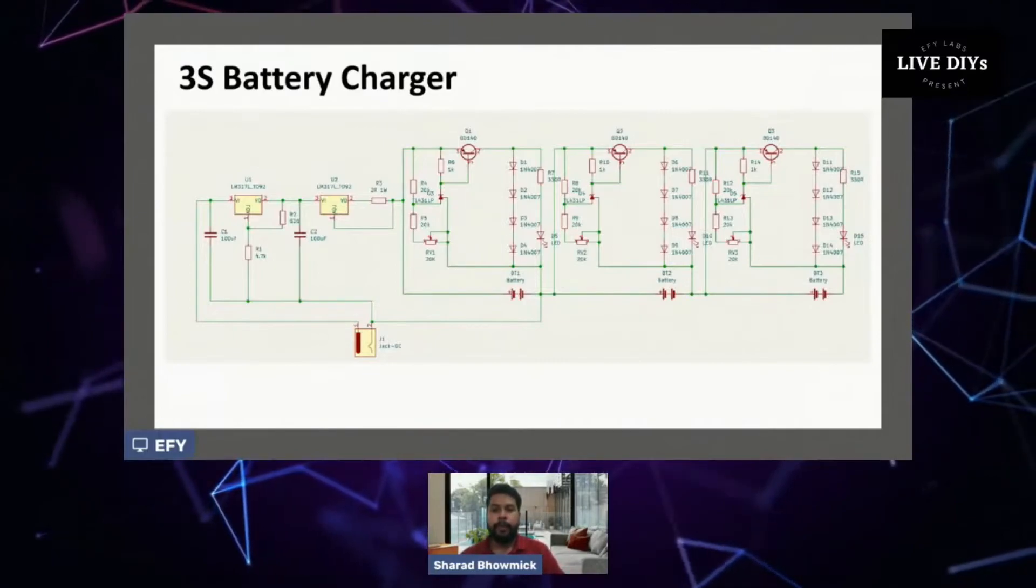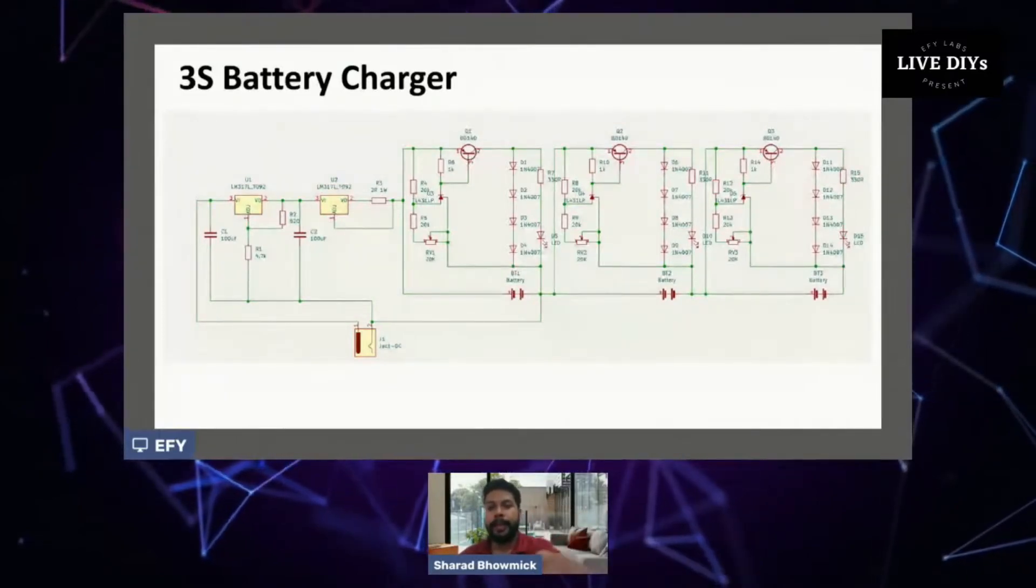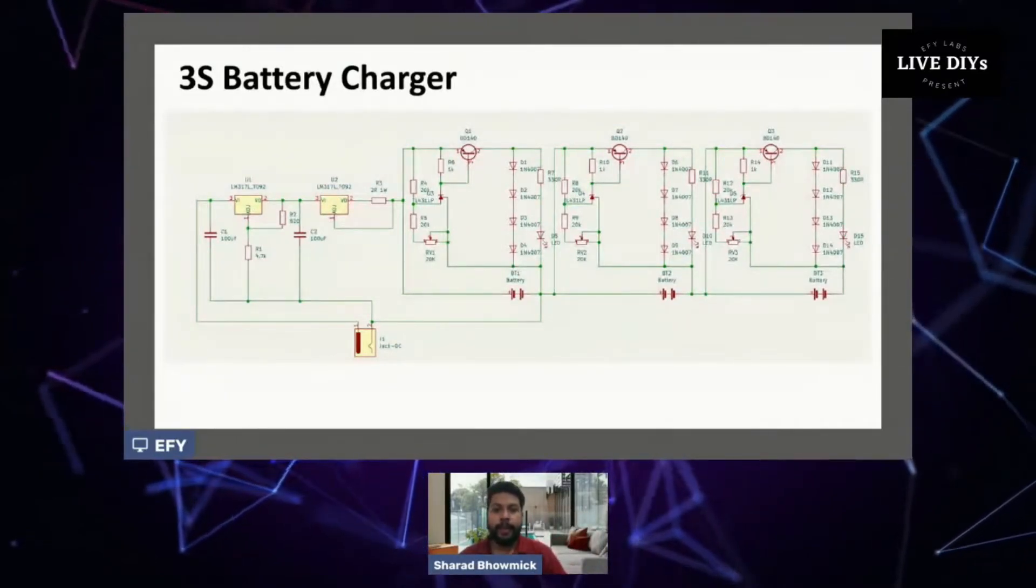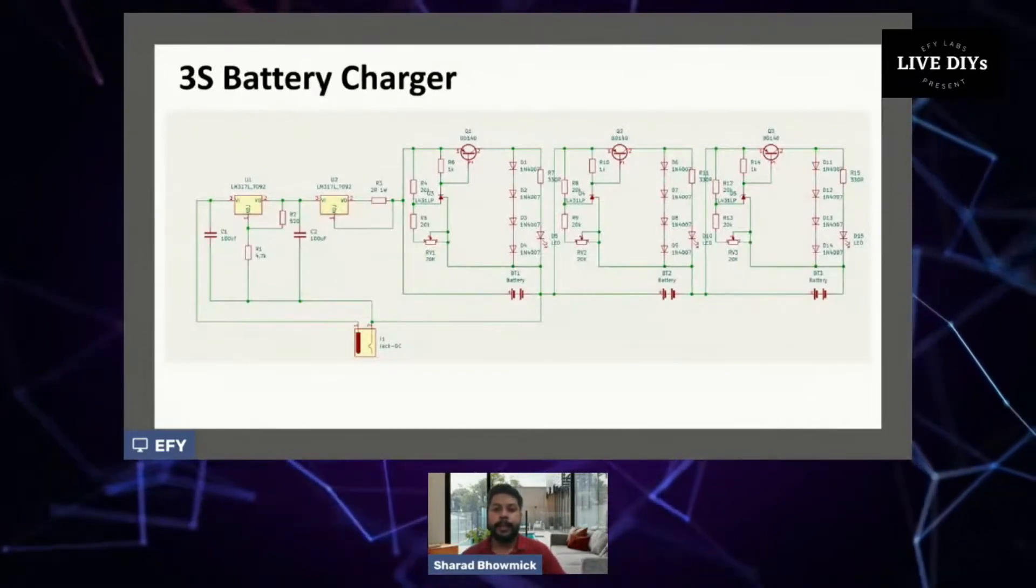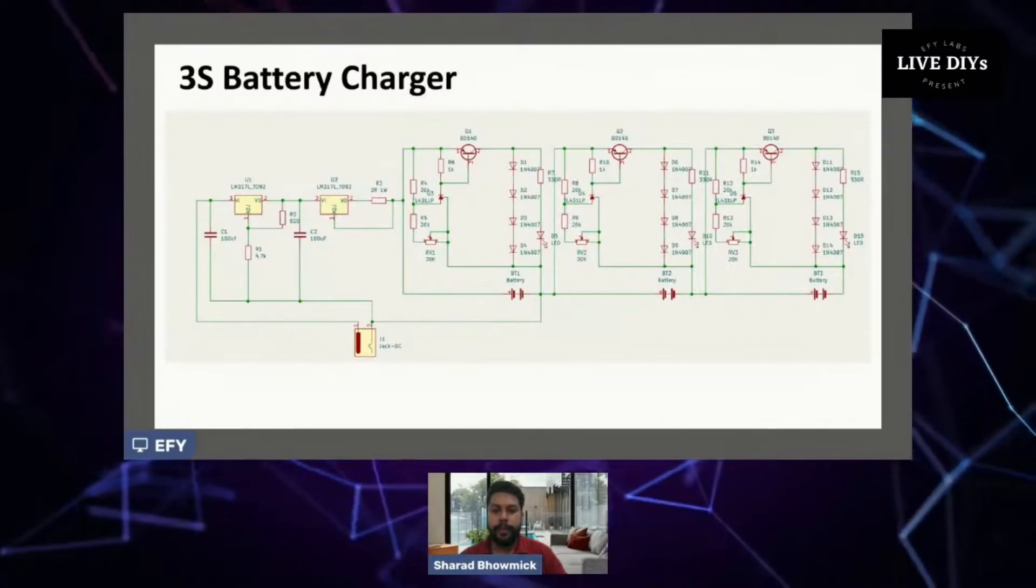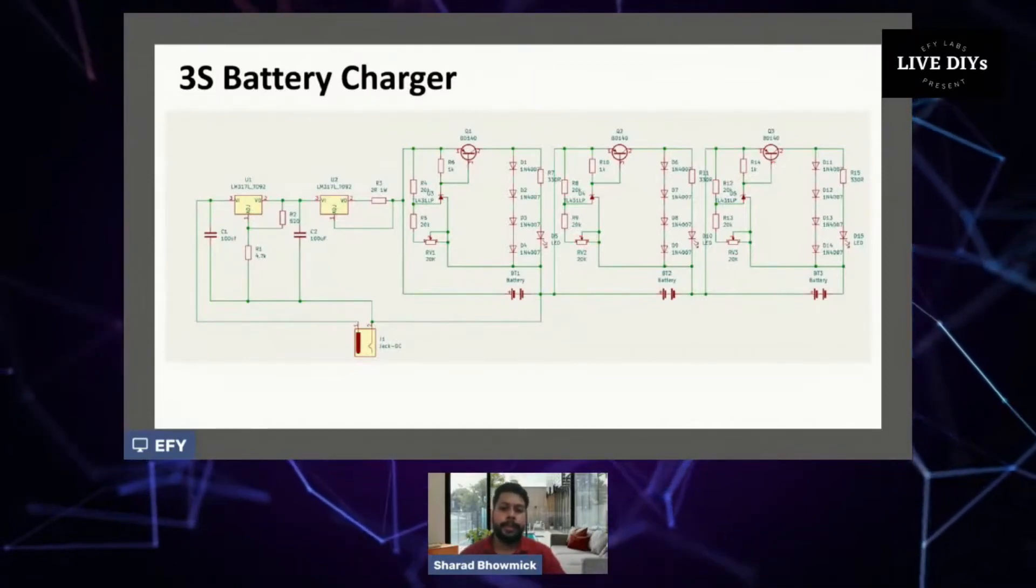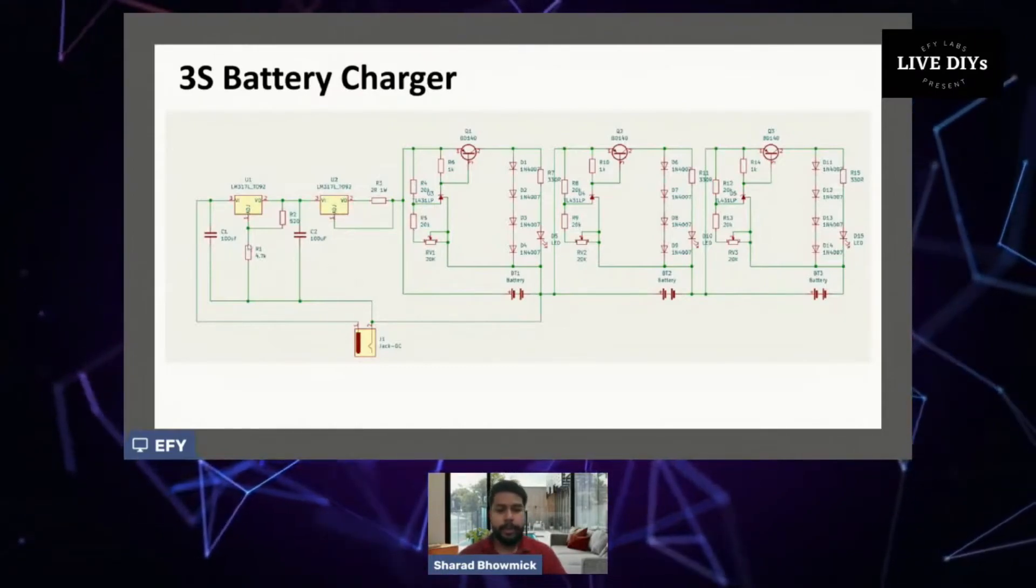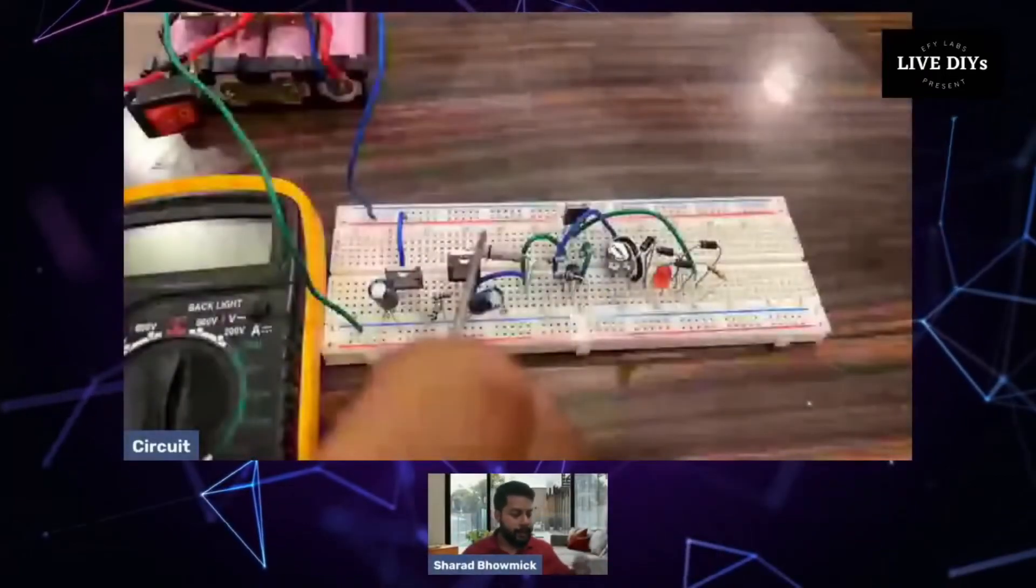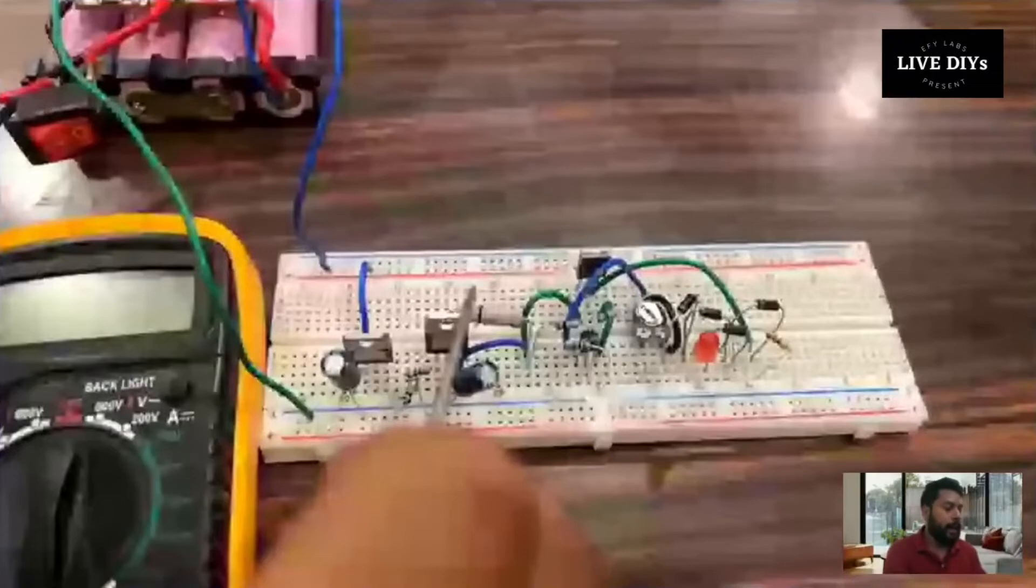We can control the amount of current by changing the R3 value, but be sure that you don't exceed 1.5 amps because that is the limit of LM317. This is how we make the circuit. This circuit is really very simple. I hope you understood the circuit.